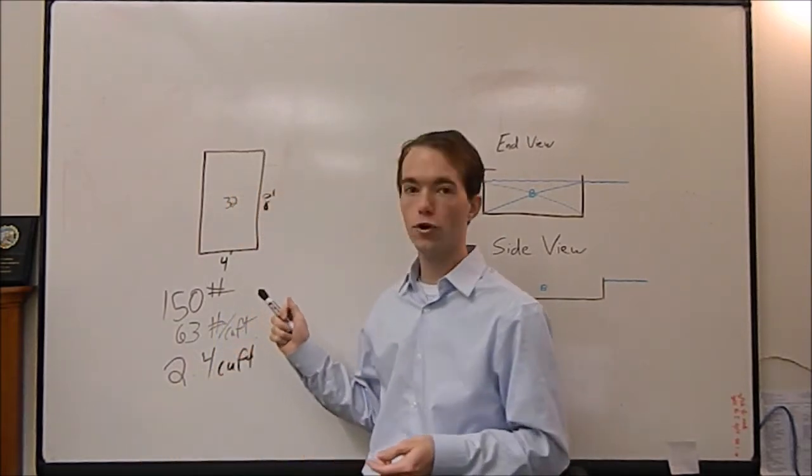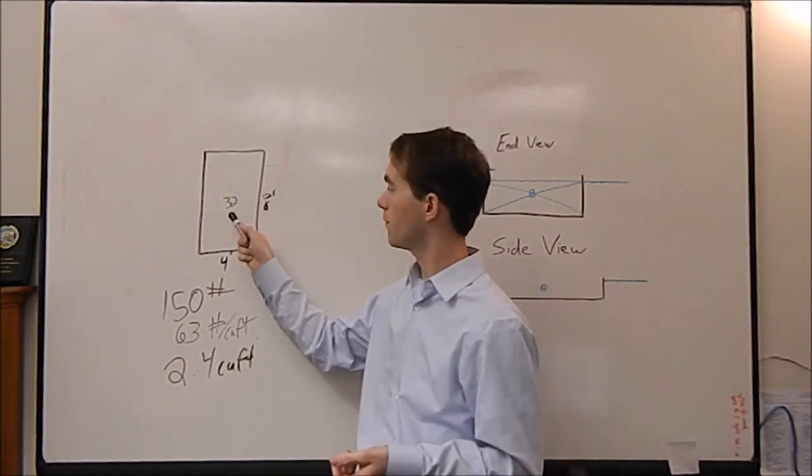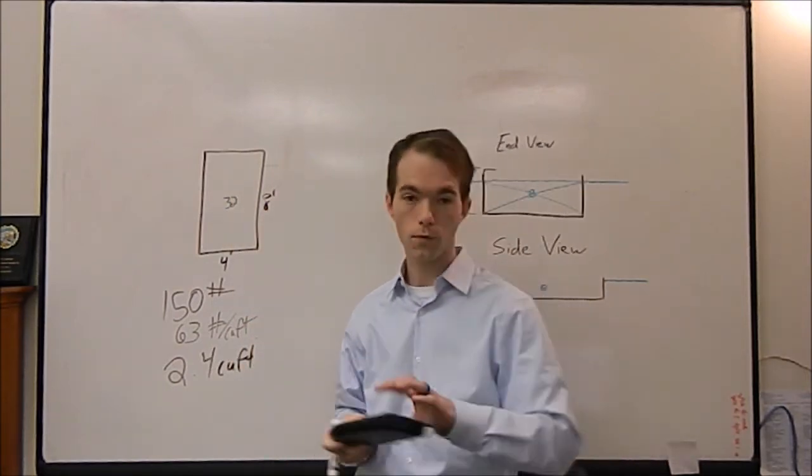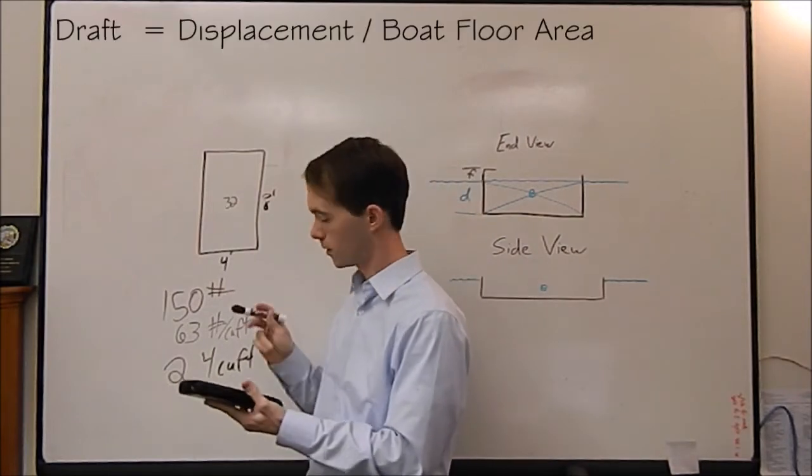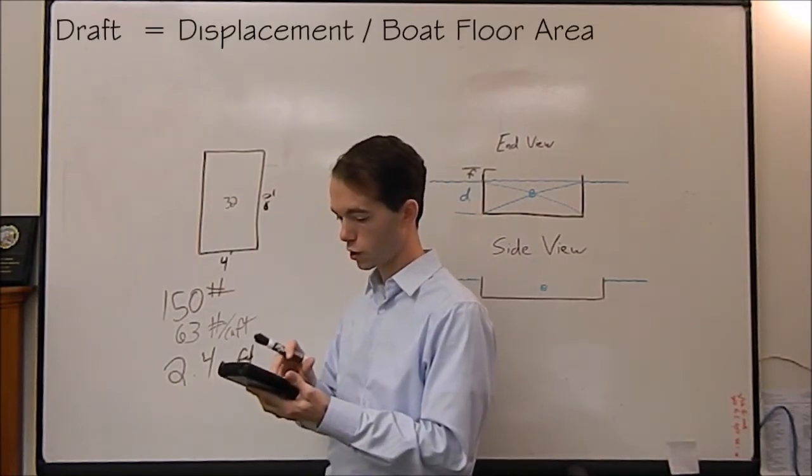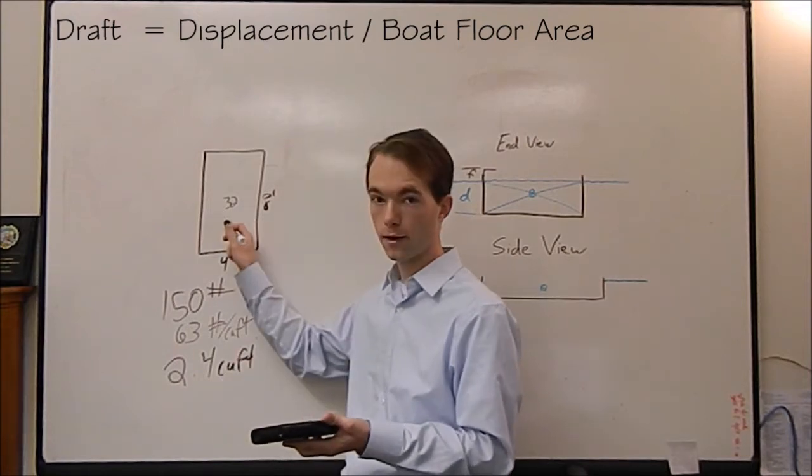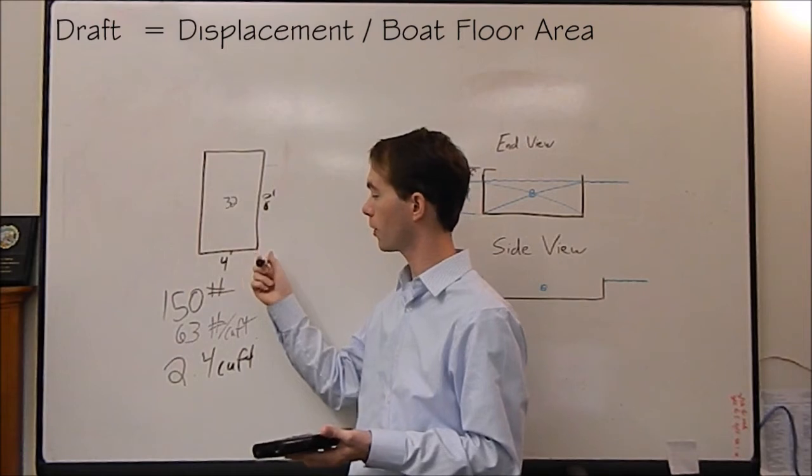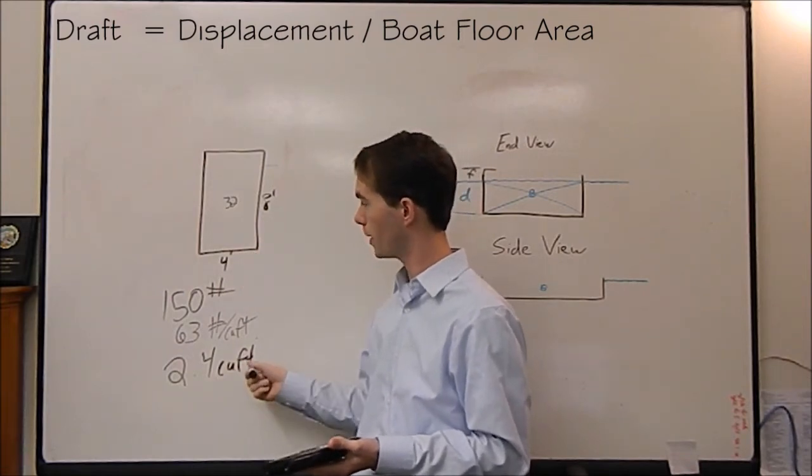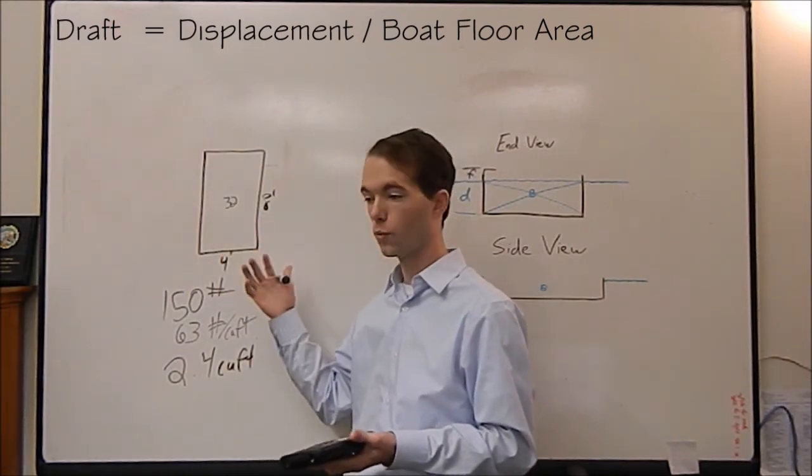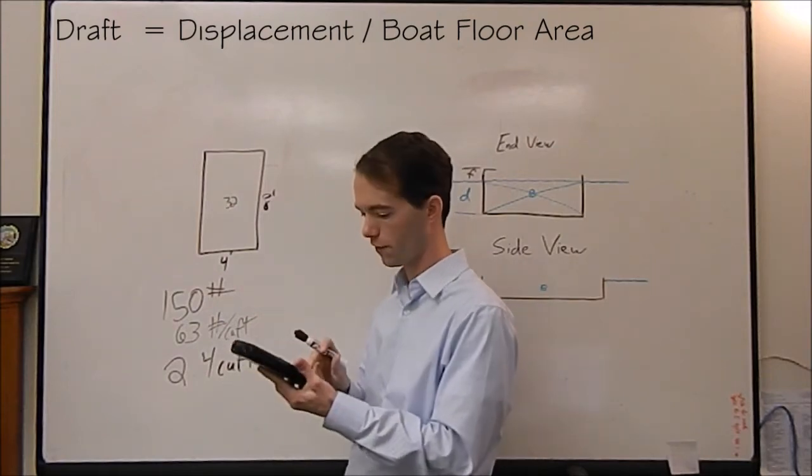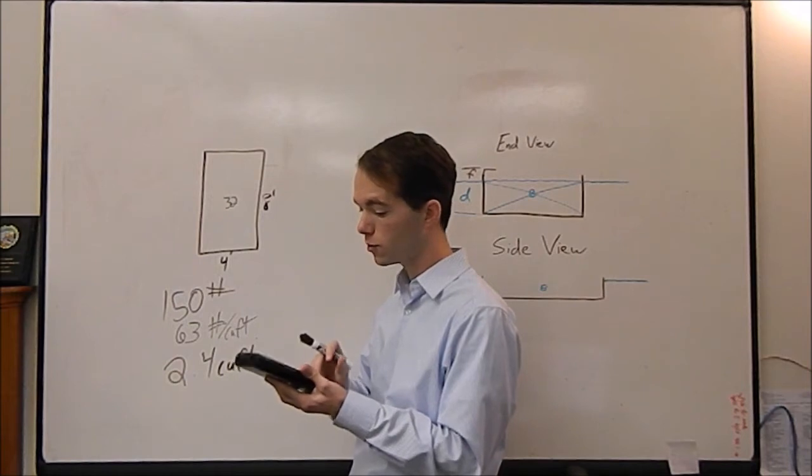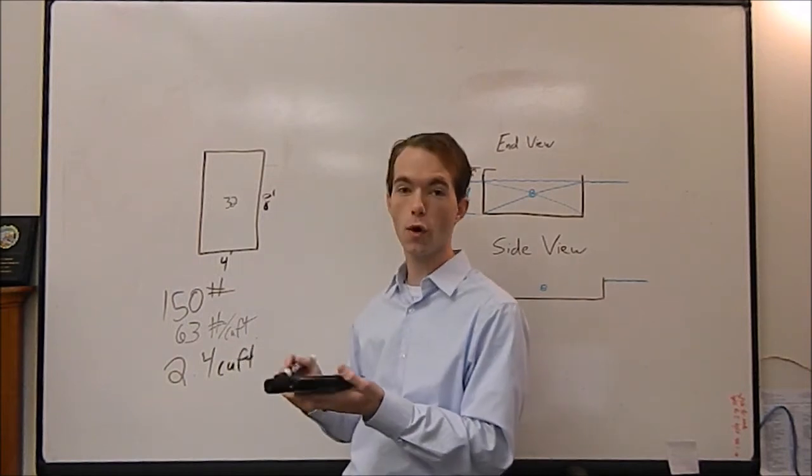When you displace 2.4 cubic feet, well, we know that we have an area of 32. So all we do is get out our calculator here. We'll do 32 divided by 2, excuse me, cubic feet back to square feet. We're looking for one dimension here. All we're looking for is this is cubic. This is square. So we want one dimension, just linear feet. So we're going to divide 2.4 divided by 32 and we're going to get 0.075.